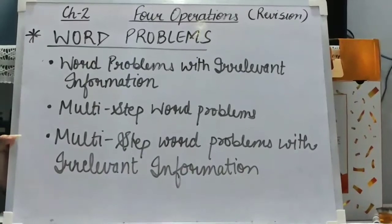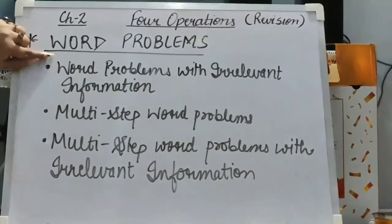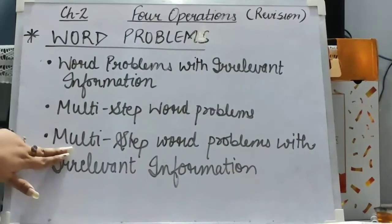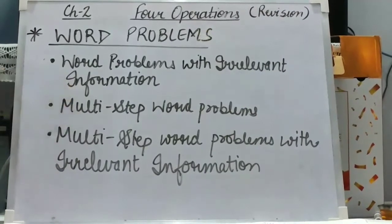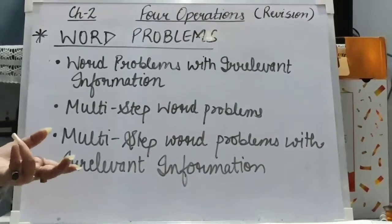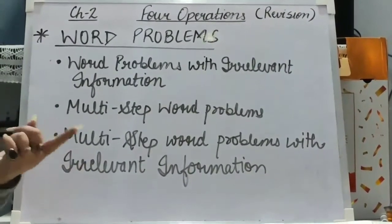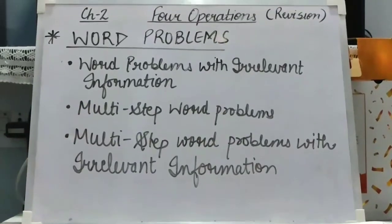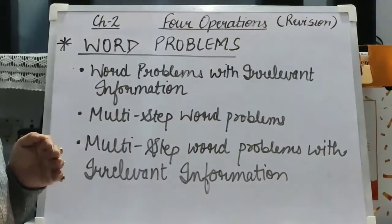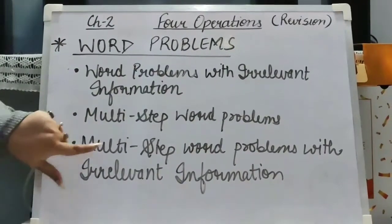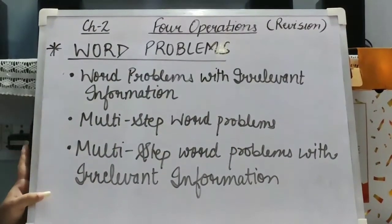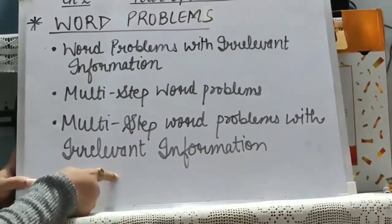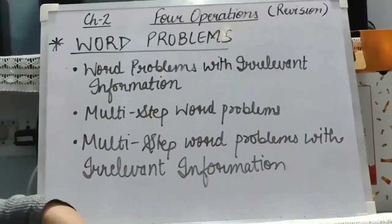After the 4 basic operations — addition, subtraction, multiplication and division — we have done word problems. In these word problems we have done 3 types: word problems with irrelevant information, multi-step word problems, and multi-step word problems with irrelevant information. In word problems with irrelevant information, there was some information that was not required for finding the answer, so we will ignore the irrelevant information and then find the answer. In multi-step word problems, the problem can have many steps to solve the answer. Multi-step word problems with irrelevant information combine both — solving in many steps and ignoring irrelevant information. For more detail, you can go and see chapter 2 part 6 again.